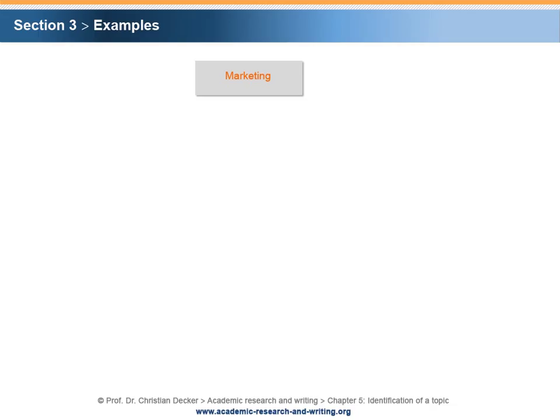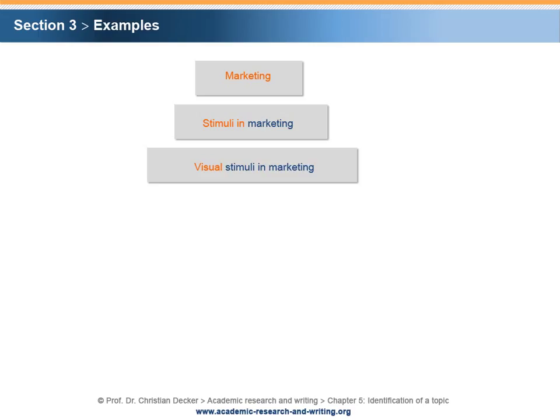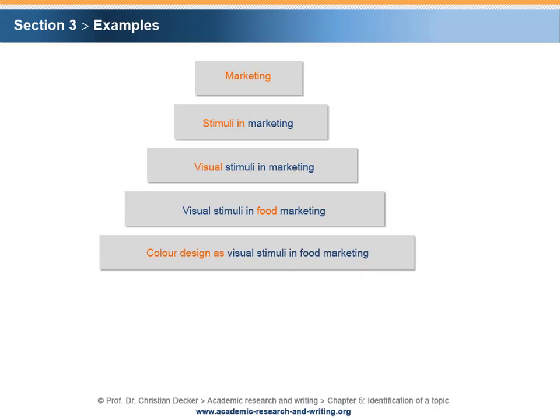Let's have a look at an example of verbalizing and refining a topic. A student with a strong interest in marketing decides to submit a proposal for a bachelor thesis. An article in a newspaper directs her interest towards sensory stimuli. She phrases the topic as 'stimuli in marketing.' After reflection, she decides to focus on 'visual stimuli in marketing,' and considering her internship in the food industry, she changes the topic to 'visual stimuli in food marketing.' She then adjusts it to 'color design as visual stimuli in food marketing.'